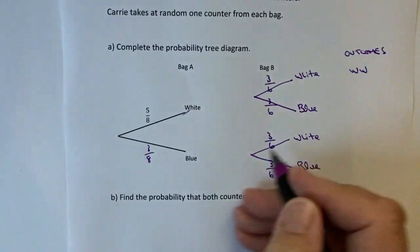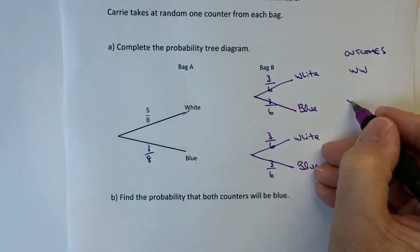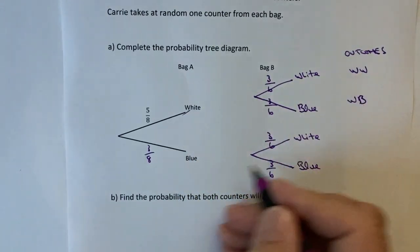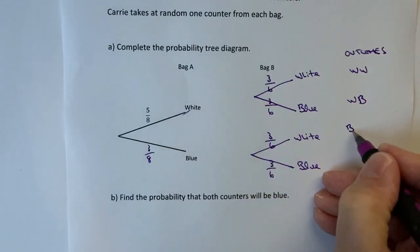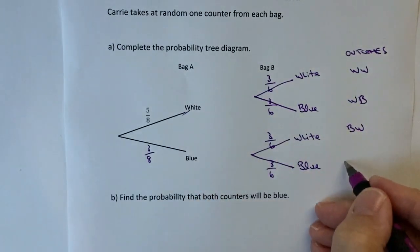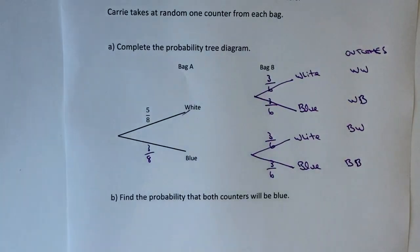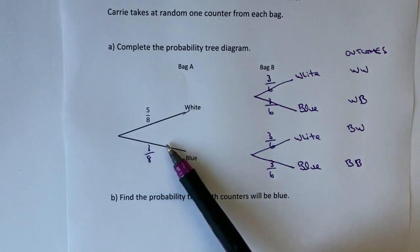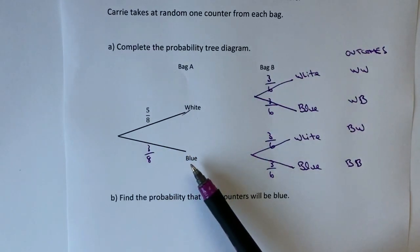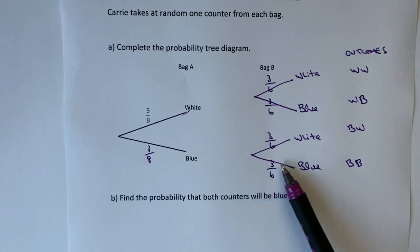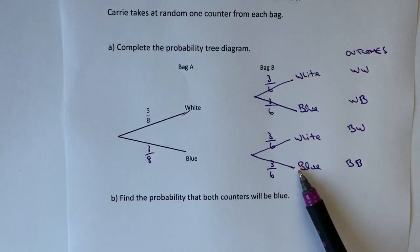The first outcome would be white white. The second one would be white blue. The third would be blue white and the fourth would be blue blue. It's the blue blue one that I'm interested in. I've just followed along that branch. So in bag A Carrie picked out a blue and then in bag B she picked out a blue again.